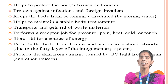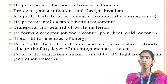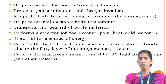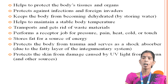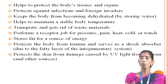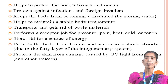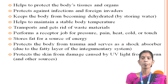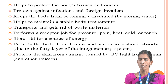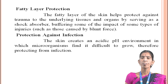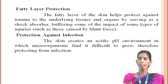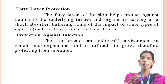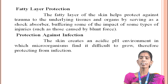It helps to maintain a stable body temperature, transports and gets rid of waste material, performs a receptor role for pressure, pain, heat, cold or touch, and stores fat for a source of energy. It protects the body from trauma and serves as a shock absorber due to the fatty layer of the integumentary system. It also protects the skin from pain caused by high UV light from sunlight. The fatty layer of the skin helps to protect underlying tissue and organs by serving as a shock absorber.